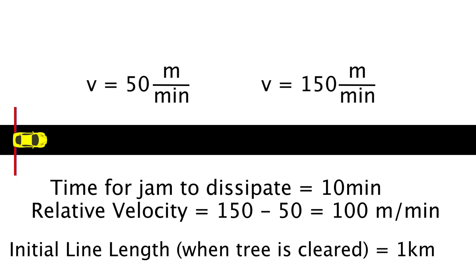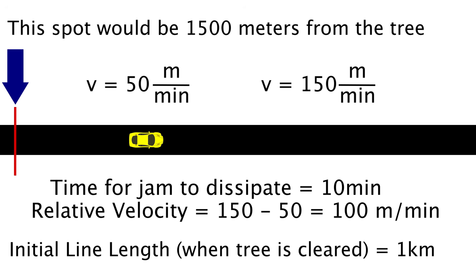And in that time, the last car to encounter the traffic would find it 1,500 meters from where the tree fell. So even once the tree is cleared, there's someone several kilometers away that is going to encounter the tail end of the traffic over a kilometer, or nearly a mile, from where the tree fell.